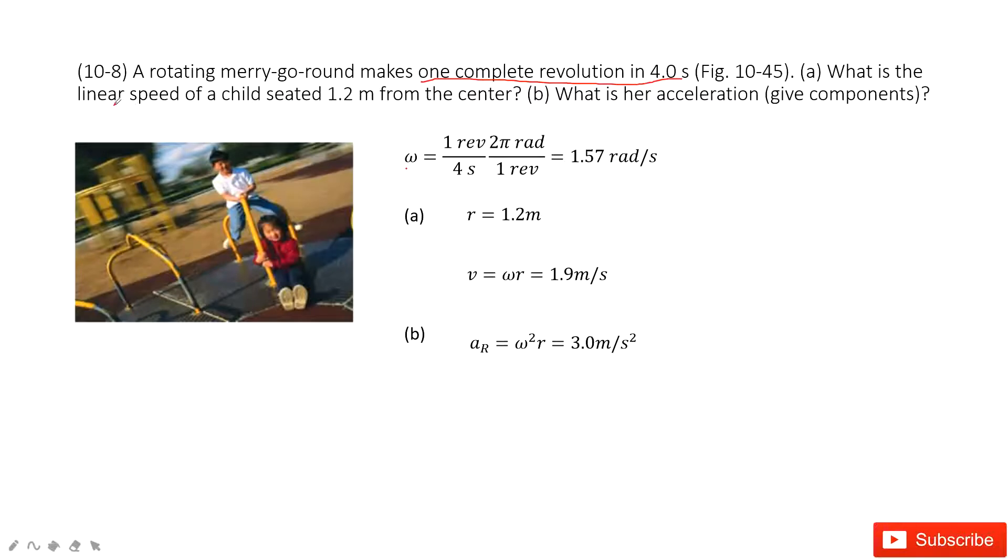And then they ask you to find the linear speed of the child seated 1.2 meters from the center. So 1.2 meters is the radius from the child to the center. Agree? This is r. So now, can you find the linear velocity for this child? Sure, because the linear velocity v equals omega times r. Omega is the angular velocity. So you input 1.57 times 1.2 to get the final answer there.